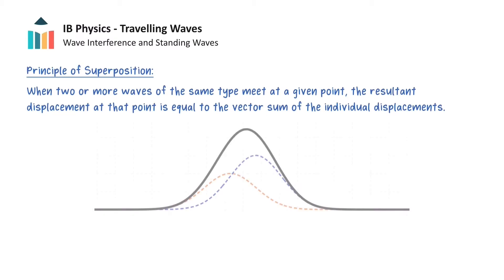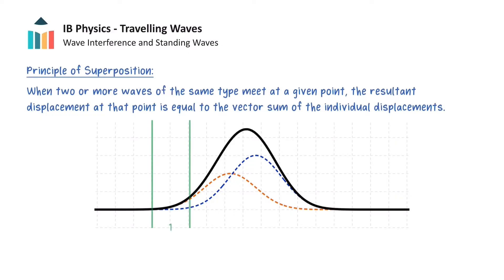So let's consider this freeze frame of the animation in more detail. The blue and orange dashed lines show the individual wave pulses during superposition, and the black line shows the resultant displacement. In region 1, the orange pulse has a non-zero displacement and the blue pulse has zero displacement, so the resultant pulse is just the orange pulse. Similarly, in region 3, the resultant pulse is equal to the displacement of the blue pulse. Now if we consider region 2, we get a resultant pulse that is equal to the sum of the displacements of the blue and orange pulses.